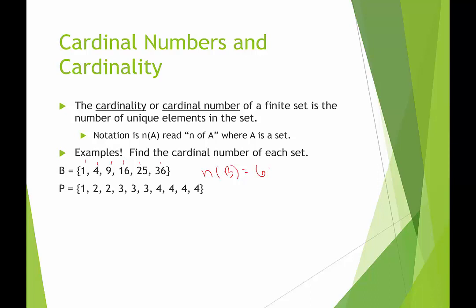Set P, we have {1, 2, 2, 3, 3, 3, 4, 4, 4, 4}. When we list the cardinality, remember it's unique. So we would only consider 1, 2, 3, and 4 to be unique because the 2, 3, and 4 all repeat. So we would say that the cardinality, or the cardinal number of set P, is 4.